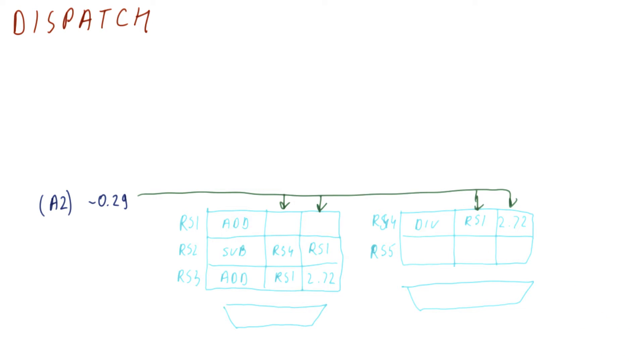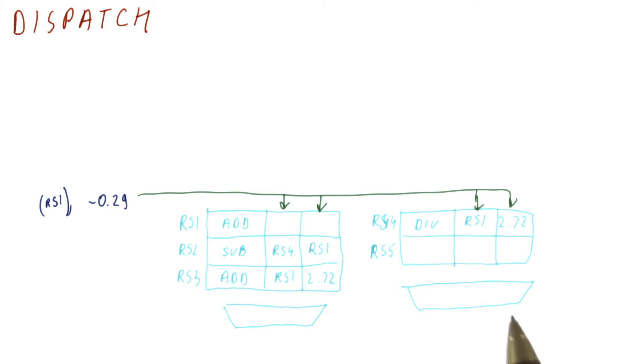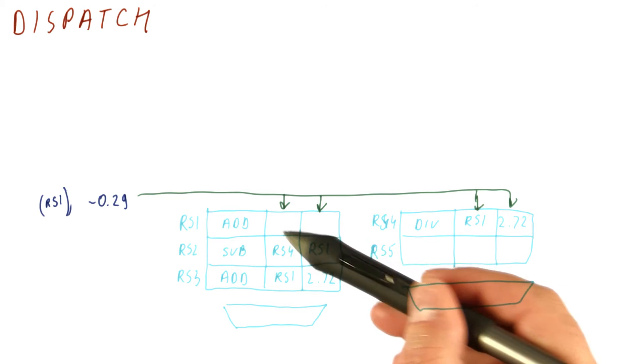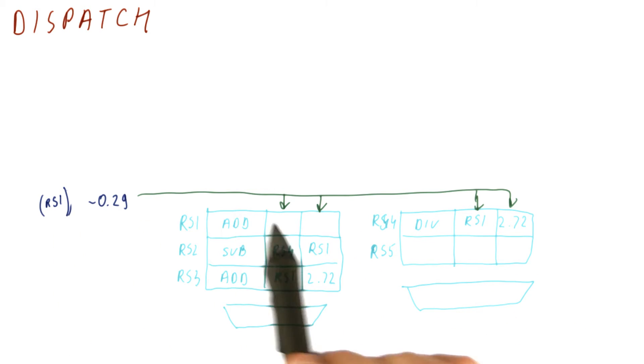So now let's do it. What's going to happen is when we broadcast the result we say which reservation station is producing the result and what the value is. And now what happens is this. The reservation station whose result is being broadcast, note that this reservation station has already dispatched this, it was executed, it was broadcast, et cetera. So now it comes back here.